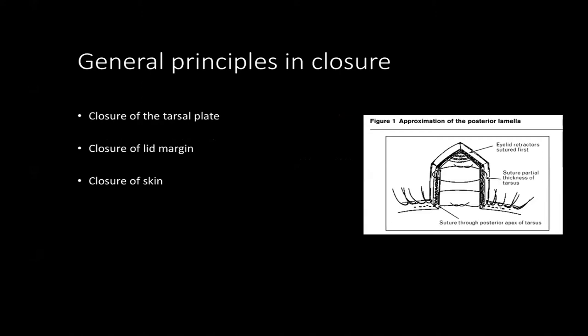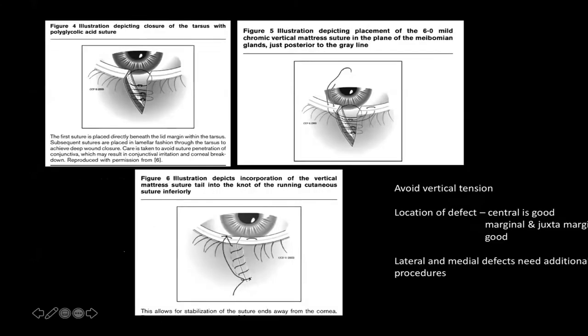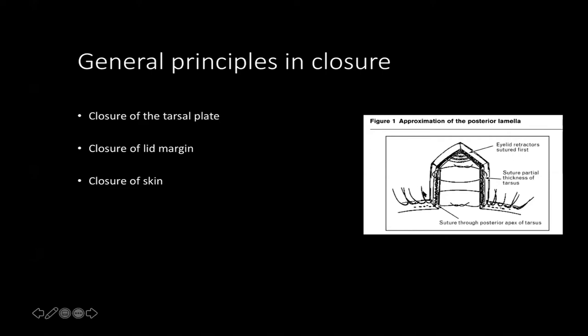There are general principles in closure to follow. It is always better to convert your through-and-through defect into a pentagonal defect, because that makes it easier to close. There are a series of sutures including closure of the tarsal plate, closure of the lid margin, and closure of the skin. You approximate the posterior lamella separately, then the skin and lid margin separately — not through and through.